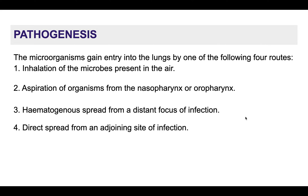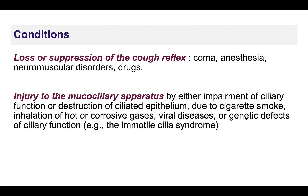Going to the pathogenesis, microorganisms can enter into the lungs by four routes. They can enter by inhalation, by aspiration of the organism from the nasopharynx or oropharynx, then hematological spread, and lastly by direct spread from any adjoining site of infection. There are certain conditions in which some reflexes of the body are altered, making us more prone to develop pneumonia.